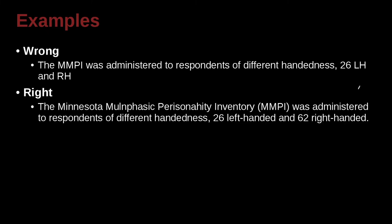The MMPI was administered to respondents of different handedness, 26 LH and RH. I'm going to guess that LH means left hand, and RH means right hand, and we also have this MMPI. So if we did not have this MMPI earlier in the paper, if this is the first time, then we need to write the MMPI out, and then write the abbreviation here.